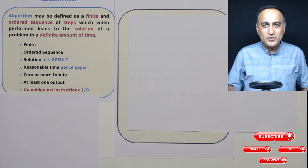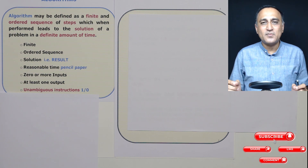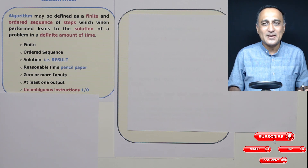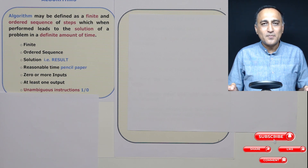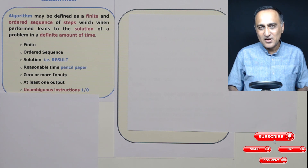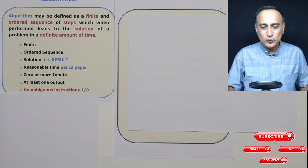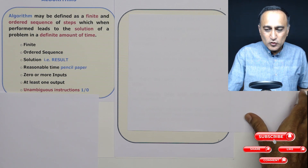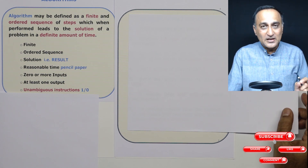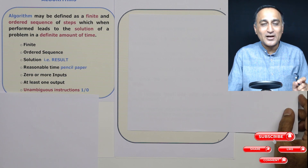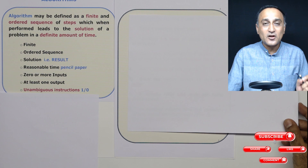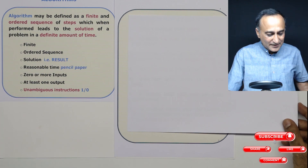To help you understand the algorithmic approach, I will take a very simple example of trying to make tea. Assume I come to your house and I say, would you like to have tea? You say yes, and I want to make two cups of tea. To make two cups of tea, I also need to follow the algorithmic approach because I cannot do it in any random way. Let's see what is the algorithmic approach for making tea.